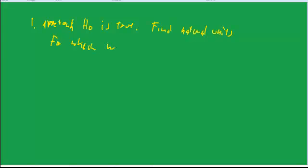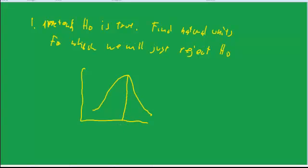So first, we pretend that the null hypothesis is true. So we do our usual thing, pretend the null hypothesis is true, and then we find the natural units for which we will just reject the null hypothesis. If we have the mean is 15, and we have a standard deviation, and we have a sample size, and we say let alpha equal 0.05, then we're giving ourselves a 5% probability of rejecting.